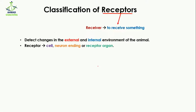Welcome to Ahmed Coaching. I'm your teacher Dr. Anam. Today we are going to study about the classification of receptors. The word 'receptors' comes from 'receiver' — meaning they receive, take, or feel something. Receptors in living organisms detect changes in the external as well as internal environment of an animal.